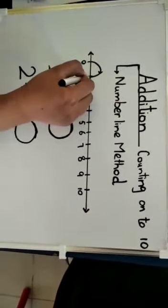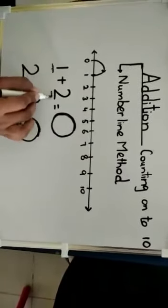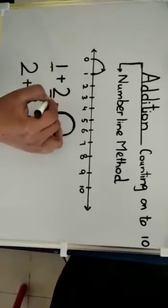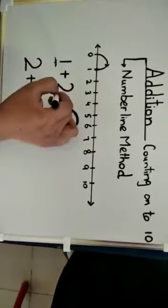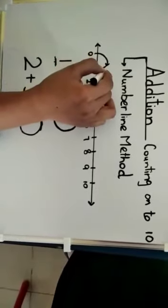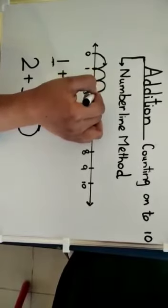Then I have to see what they are adding in the question. Number two. So the next number you have to jump according to the next number. Like here is number two. So you have to jump how many times? Two times. One, two.